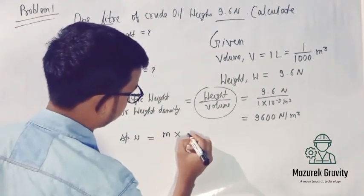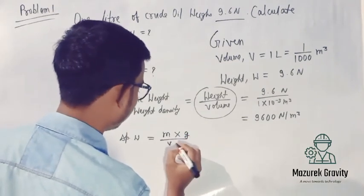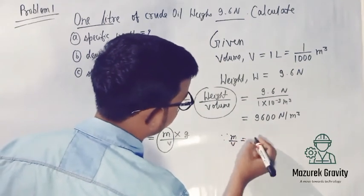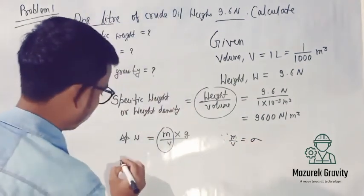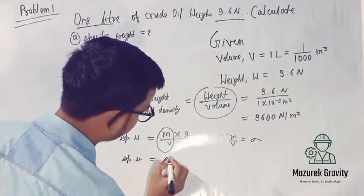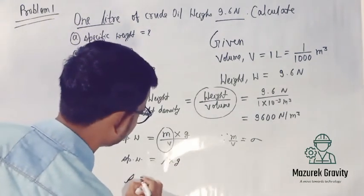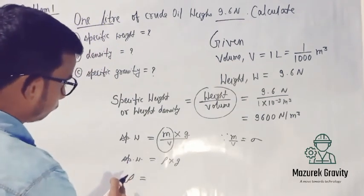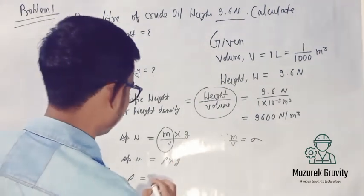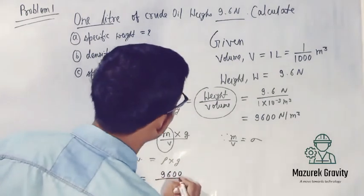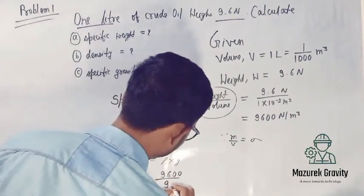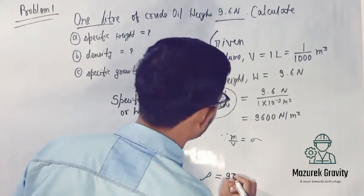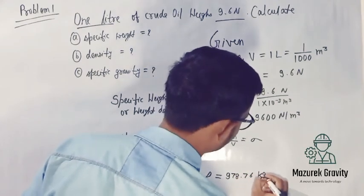Now we focus on specific weight equals weight upon volume. Weight is mass into g, so weight upon volume gives mass upon volume, which equals density. Therefore specific weight equals rho into g. So density equals specific weight upon g, which is 9600 upon 9.80, giving density equal to 978.76 kg per meter cube.